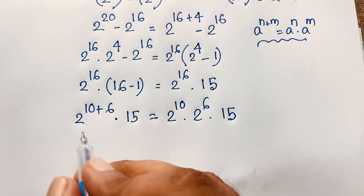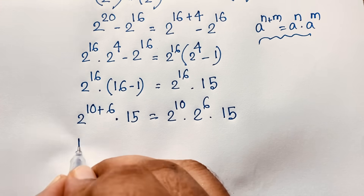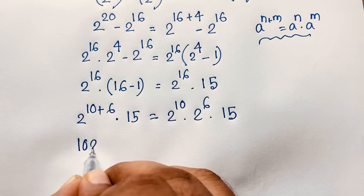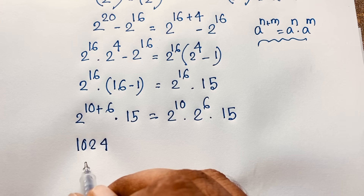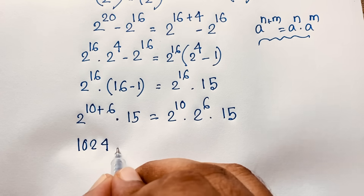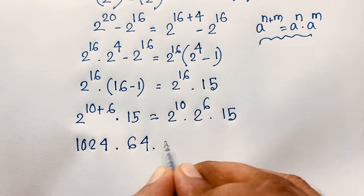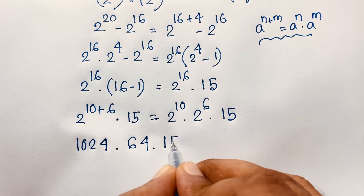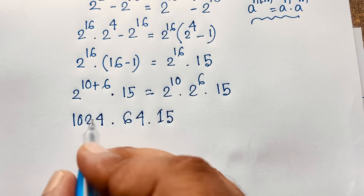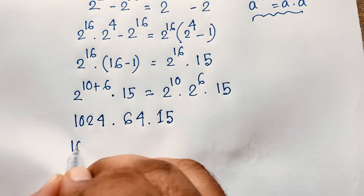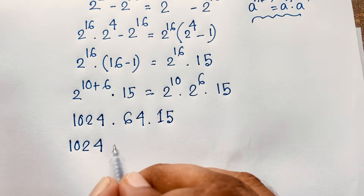Now, 2 to the power 10 equals 1024, and 2 to the power 6 equals 64. So our expression becomes 1024 times 64 times 15.